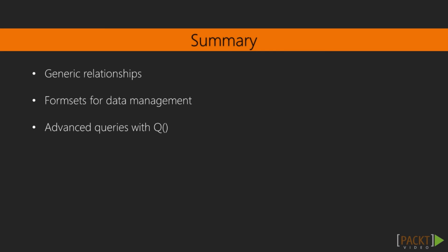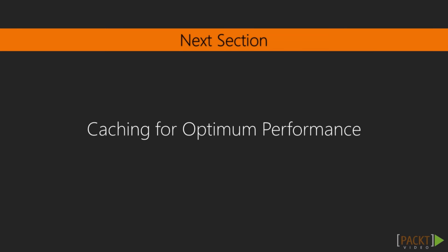In this section we covered how to create generic relationships to do more complicated queries while still getting the benefits of the ORM. Then we discovered how to do bulk creation and editing of records using formsets. Finally we made our queries more sophisticated using the Q method. In the next section we'll cover caching.